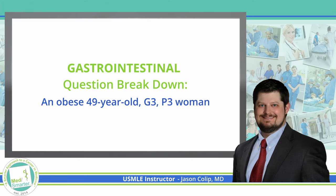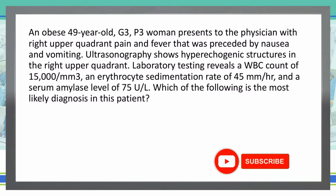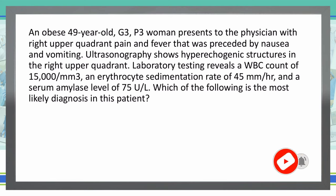Welcome back to our Med Smarter question of the day. An obese 49-year-old G3P3 woman presents to the physician with right upper quadrant pain and fever that was preceded by nausea and vomiting. Ultrasound shows hyperechoic structures in the right upper quadrant.